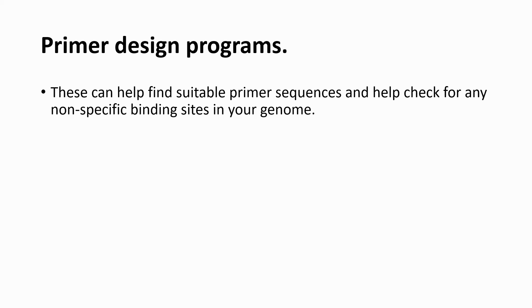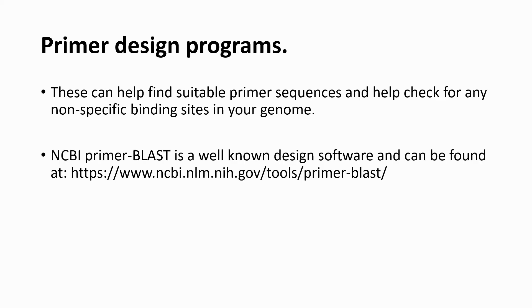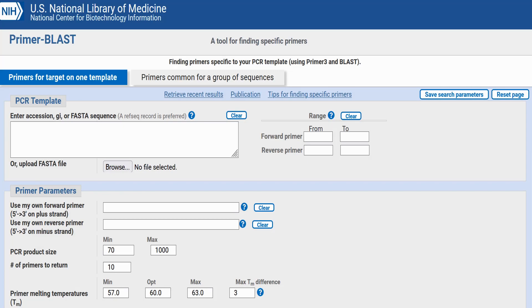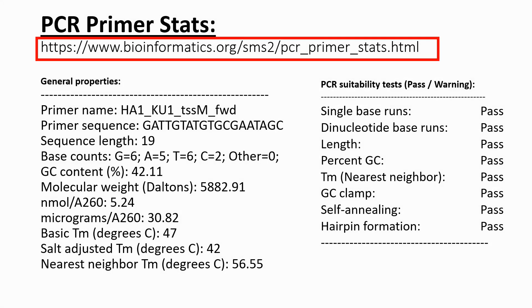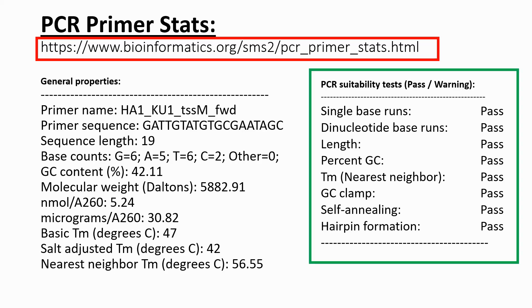When designing primers using online programs, there are numerous tools to choose from. These can help find suitable primer sequences within a specific genomic region and can also check for any nonspecific binding sites in the genome overall. NCBI Primer Blast is a well-known primer design software — a link to the site is shown. In the website, primers can be predicted for user-submitted sequences. There are other sites available to check your primer stats; one example checks primer suitability in terms of length, percent GC, and self-annealing properties, just to name a few.